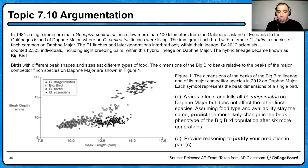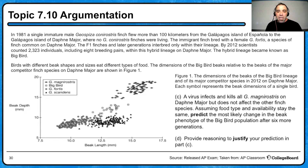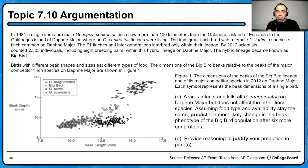Part C: a virus infects and kills all of one species of finch on Daphne Major but does not affect the other finch species. Assuming food type and availability stay the same, predict the most likely change in the beak phenotype of the big bird population after six more generations. Part D: provide reasoning to justify your prediction in part C. Pause the video and write down some options before I give you the answers.